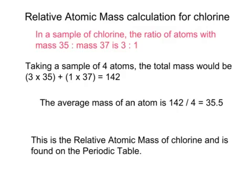So, let's take the smallest total, and that will give us 4 atoms of chlorine, and let's work out what 4 atoms of chlorine would weigh. Well, 3 of them would weigh 35, and 1 of them would weigh 37, making a total mass of those 4 atoms of 142.